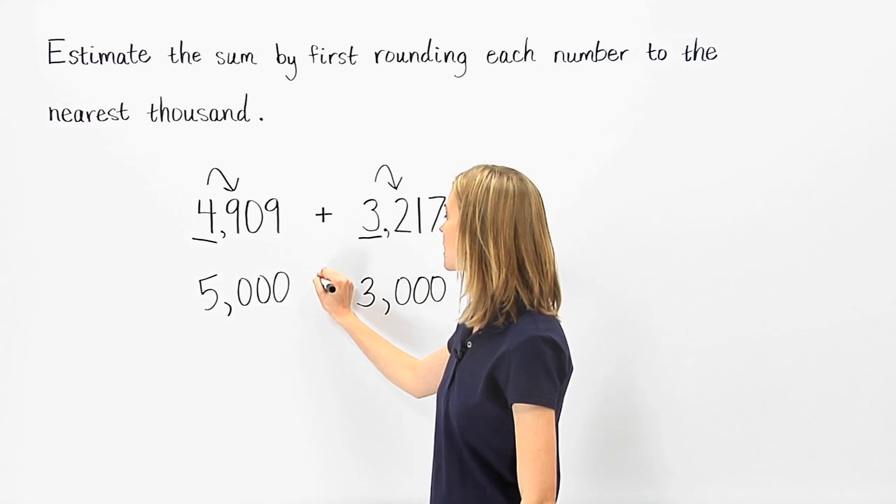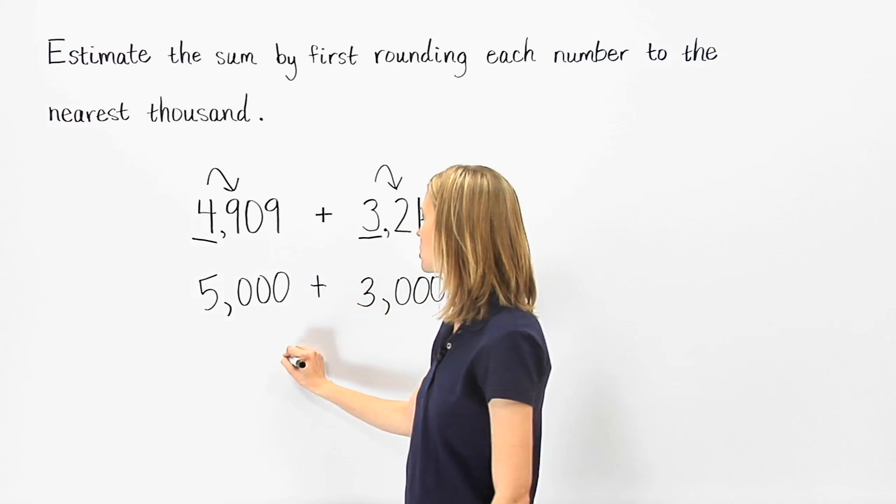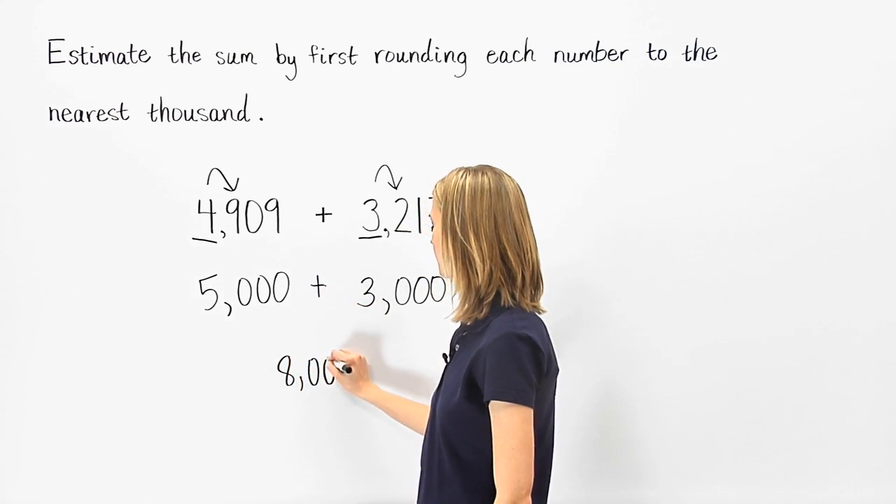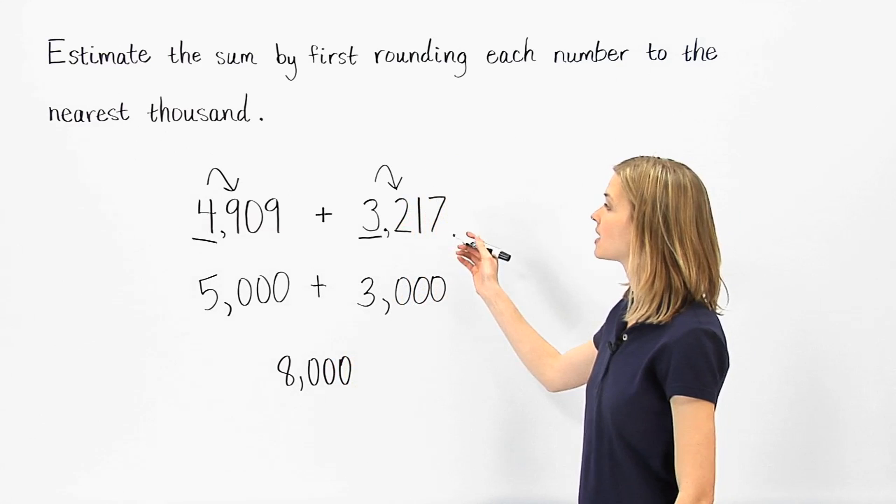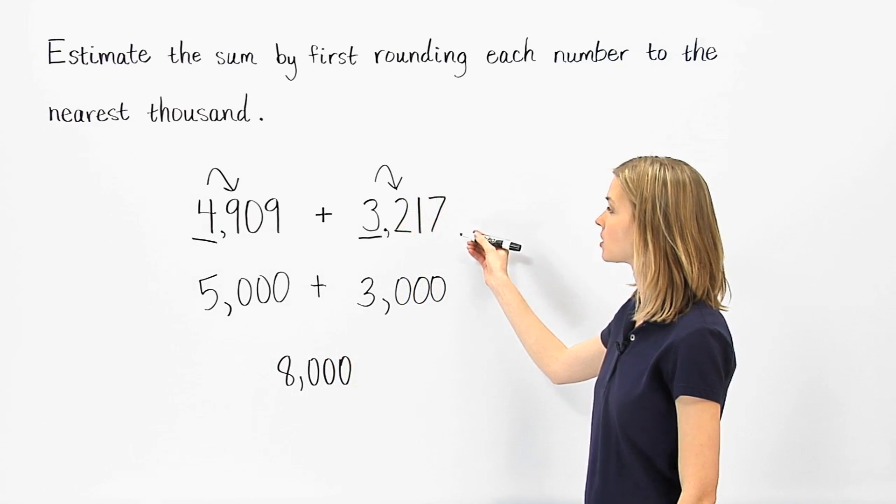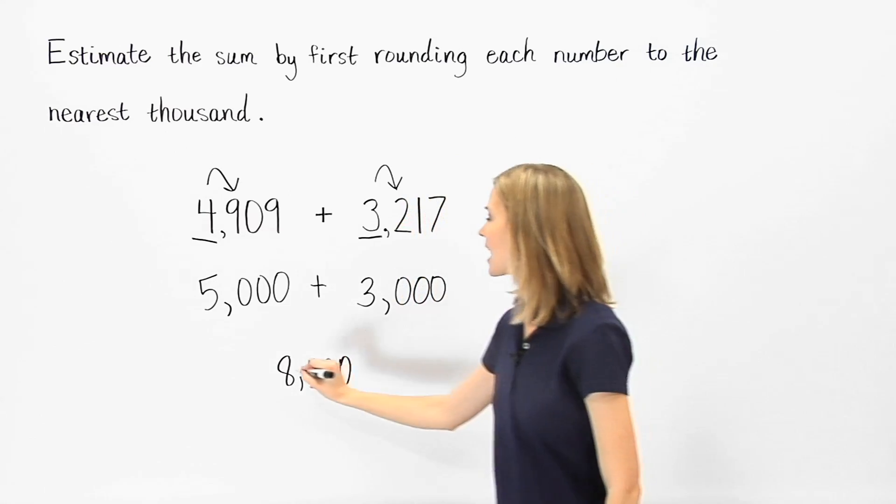And we have 5,000 plus 3,000, which is 8,000. So we can estimate that the sum of 4,909 and 3,217 is 8,000.